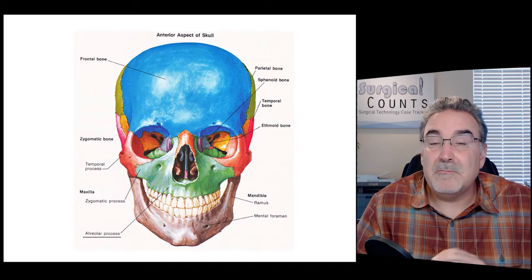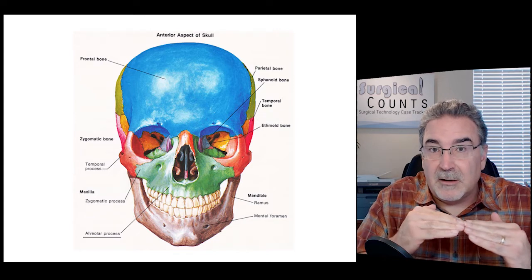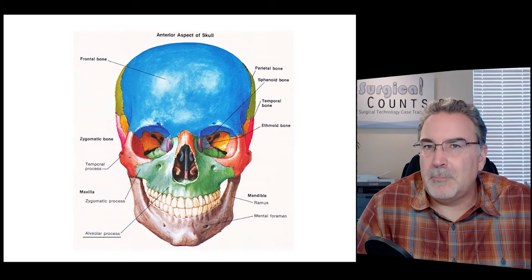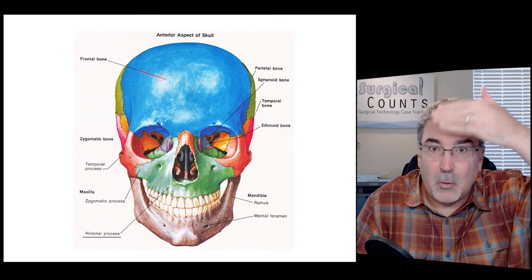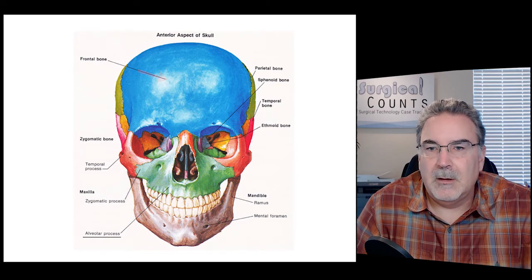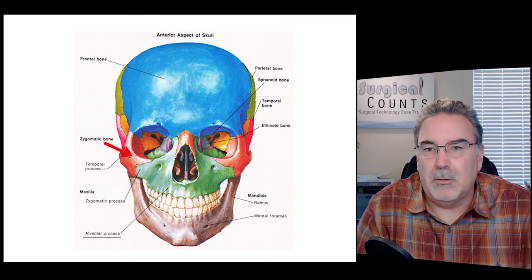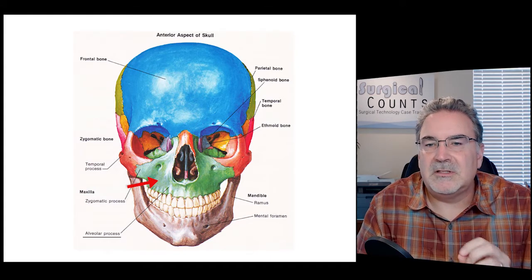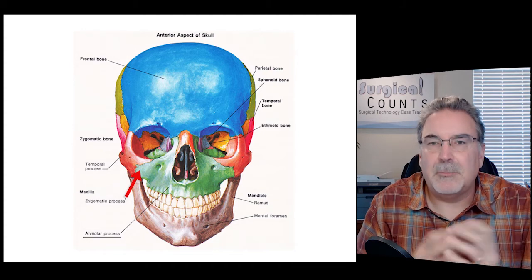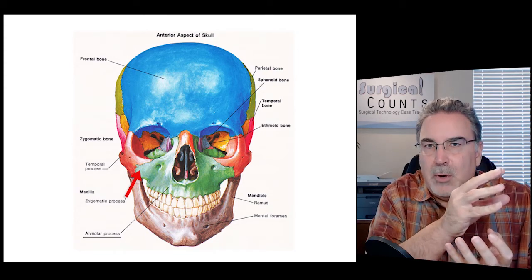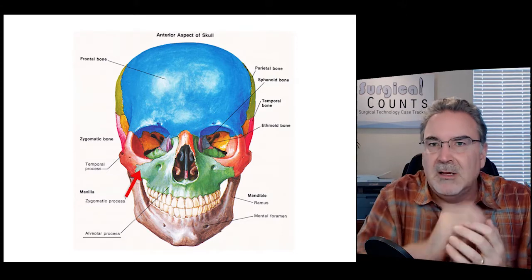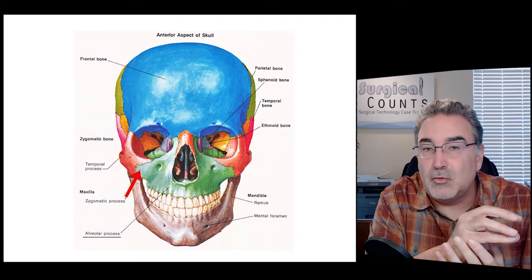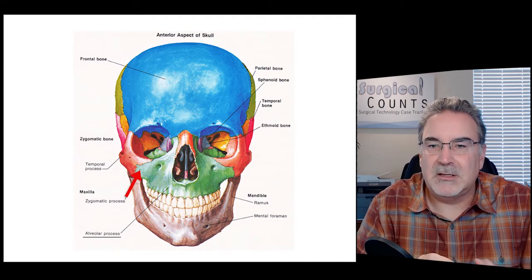The skull itself is made up of many different bones, most of which are fused together — their joints don't really move very much or at all. Knowing the different bones and where they are in the skull is very important in this chapter. Starting in the very front, the forehead area is the frontal bone. Coming down to the sides are the zygomatic bones, which make up most of the cheekbones. Right around and under the nose, we have the maxilla bone. The maxilla bone has a zygomatic process — a process is a little extension of a bone that reaches out to connect to the zygomatic bone.